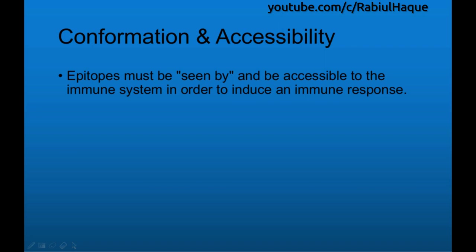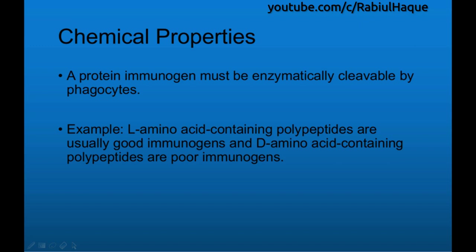The next feature is regarding conformation and accessibility. Always remember, epitopes must be seen and must be accessible to the immune system in order to induce an immune response. The next feature is regarding chemical properties. A protein immunogen must be enzymatically cleavable by phagocytes. L-amino acid containing polypeptides can be enzymatically cleaved inside phagocytes and are therefore considered good immunogens. However, D-amino acid containing polypeptides cannot be enzymatically cleaved inside phagocytes, so they are poorly immunogenic.